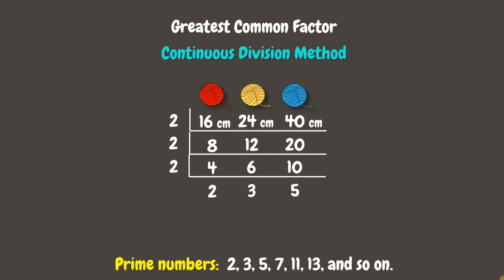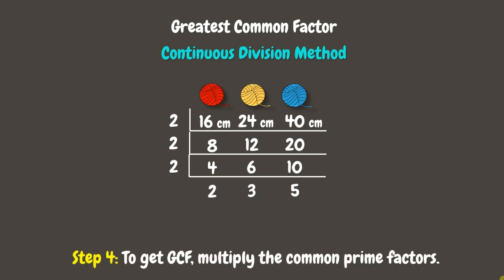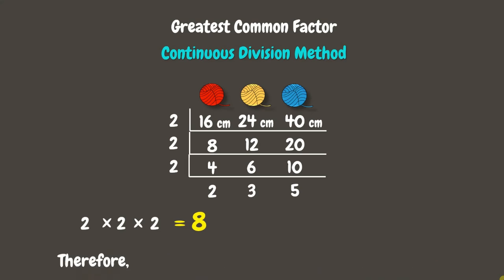The quotients can no longer be divided by 2 or any other prime numbers. The prime numbers on the left used as divisors are called common prime factors. To find the GCF, let us multiply the common prime factors. In this case, the common prime factors are 2, 2, and 2. Therefore, that's 2 times 2 times 2, which is 8. And 8 is our GCF.